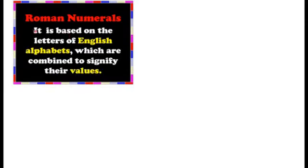The second rule says: if a smaller numeral follows a large numeral, the numbers are added. That means if a smaller numeral comes after a large numeral, we add both the values.